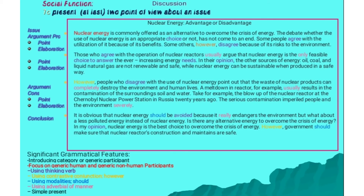To better understand this type, here is an analysis example of discussion text and the language features used in the text. The significant grammatical features include: introducing category or generic participants, both human and non-human (shown in color); using thinking verbs (shown in purple); using contrastive conjunction such as 'however'; using modalities (shown in blue); using adverbial of manner (shown in pink); and using simple present tense.